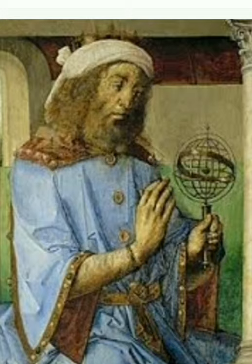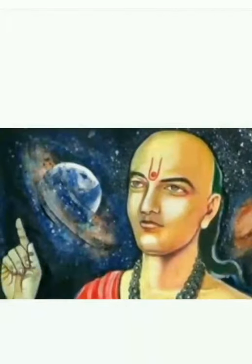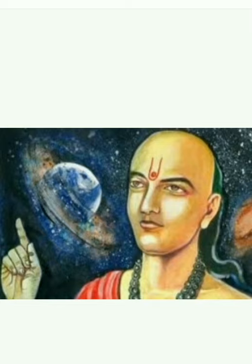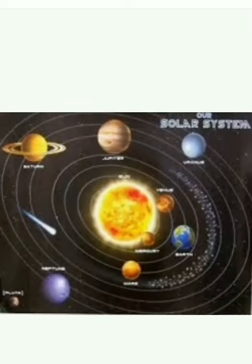After some years, observe the picture. He is Arya Bhatta. Arya Bhatta proposed that the earth and the other planets revolved around the sun.